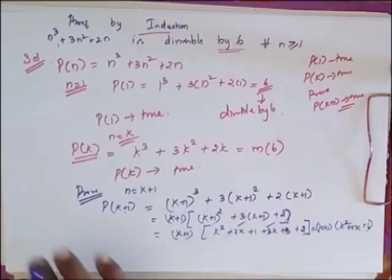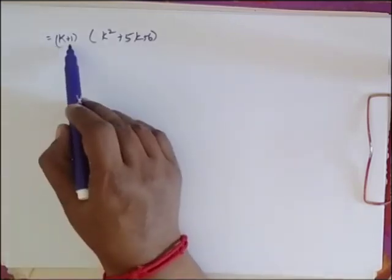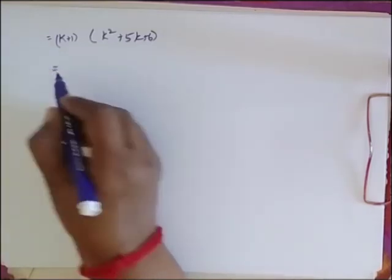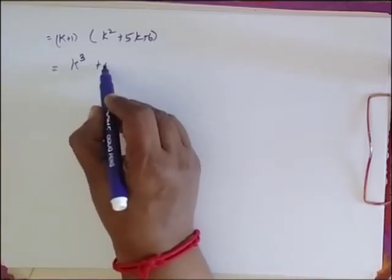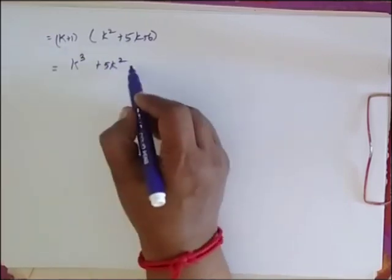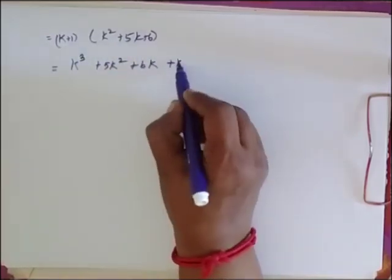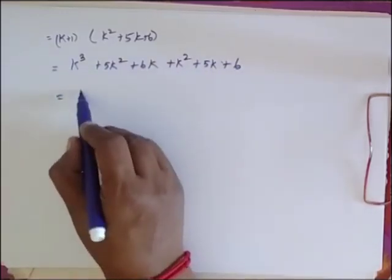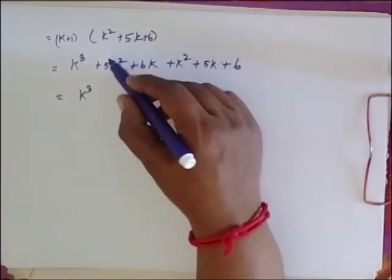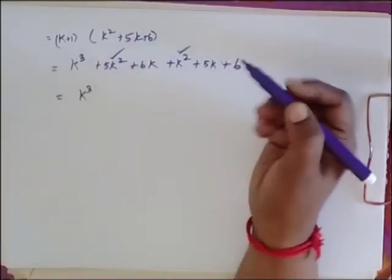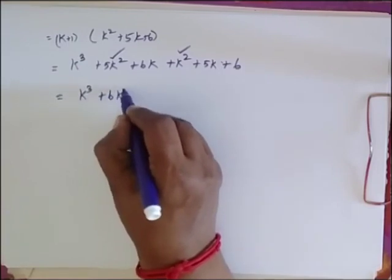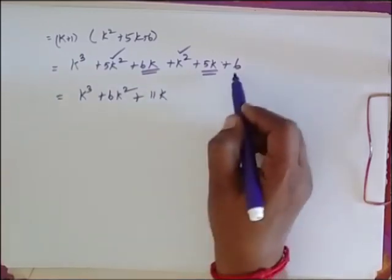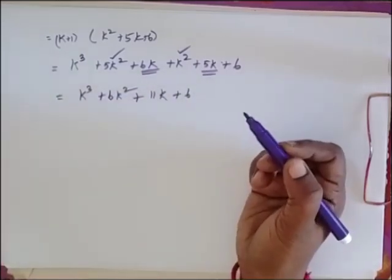Further simplifying, I have (K+1)(K² + 5K + 6). Expanding this gives K³ + 5K² + 6K, then plus K² + 5K + 6. So this equals K³ + 6K² + 11K + 6.